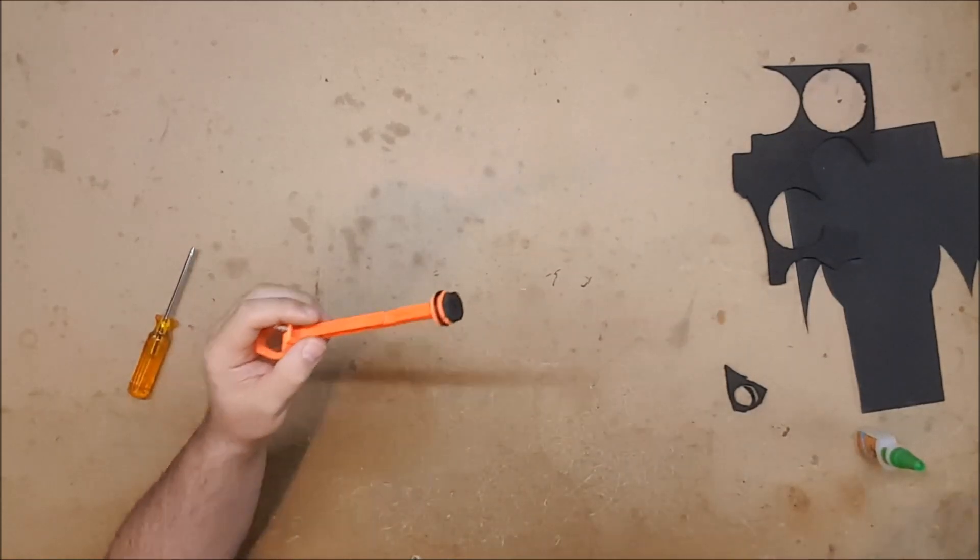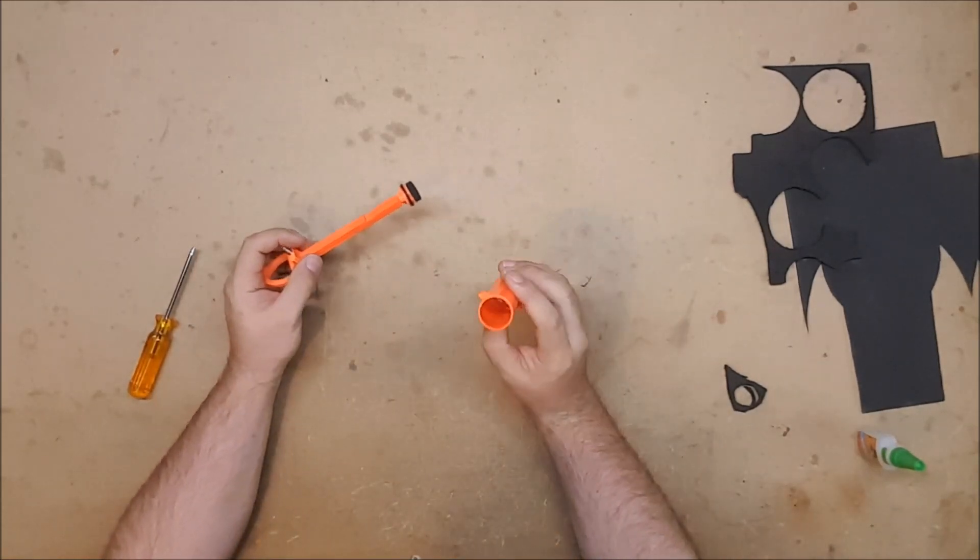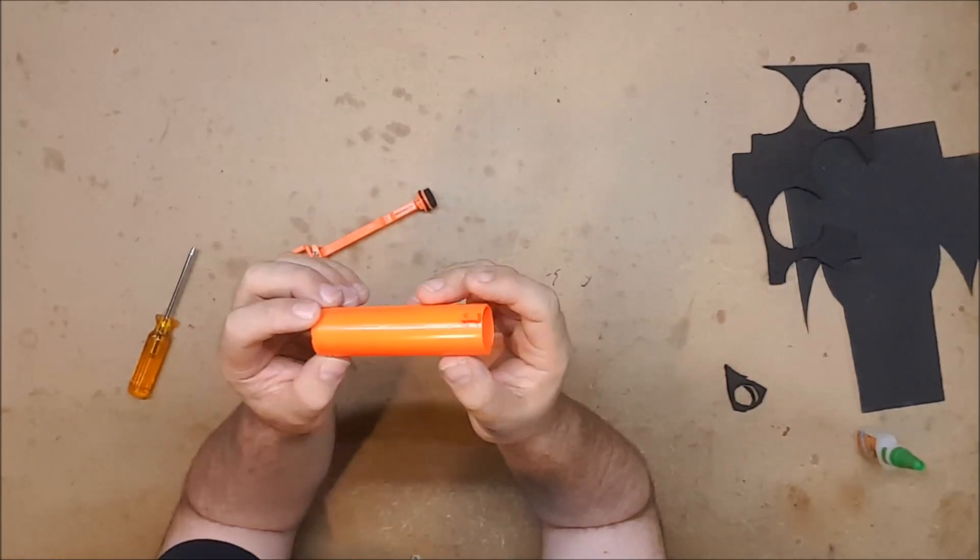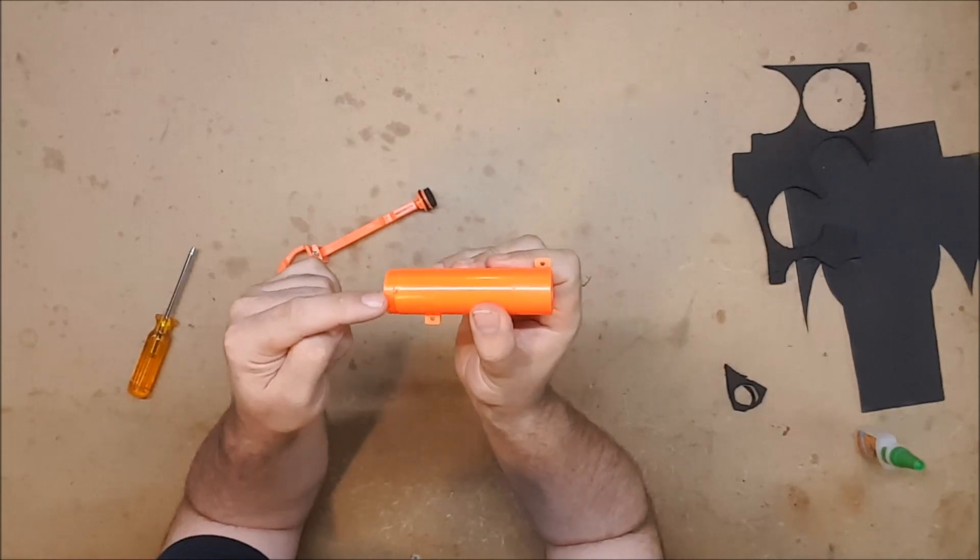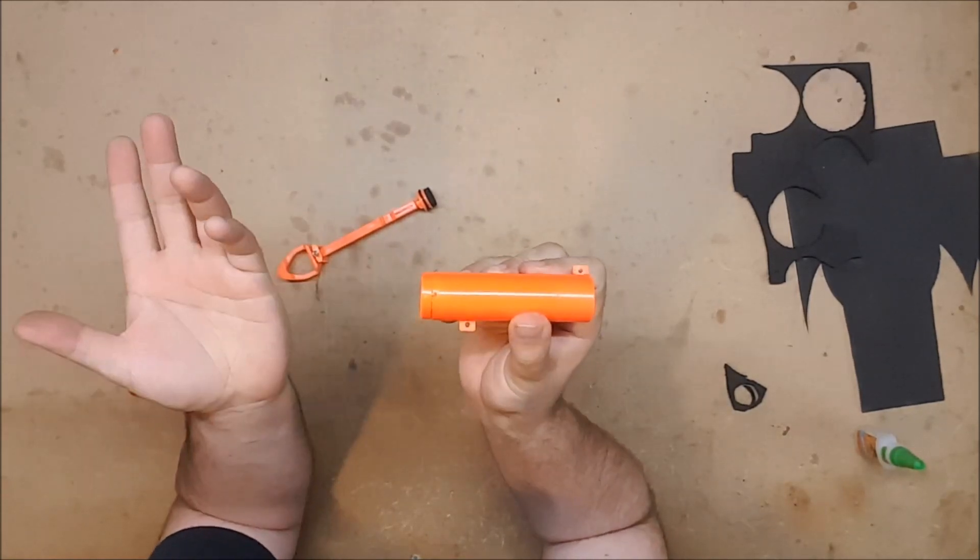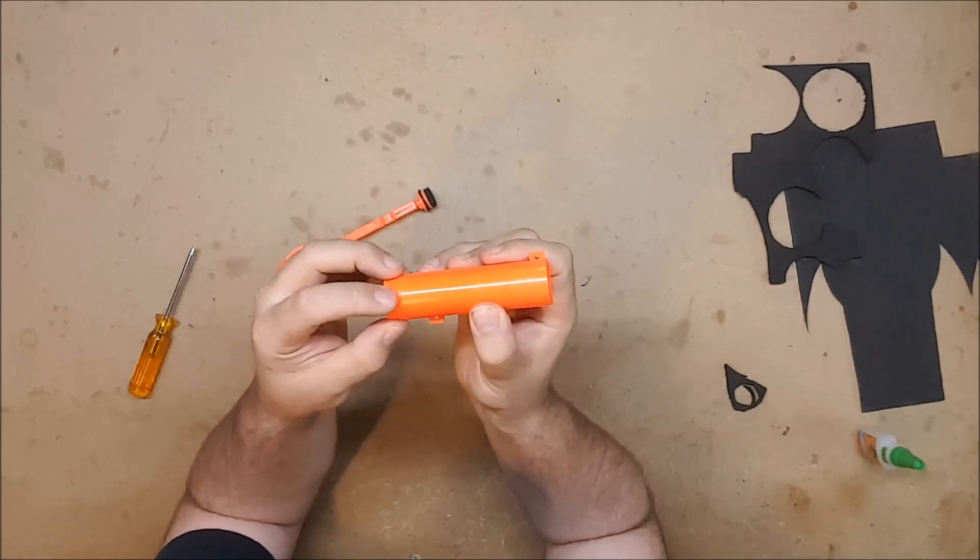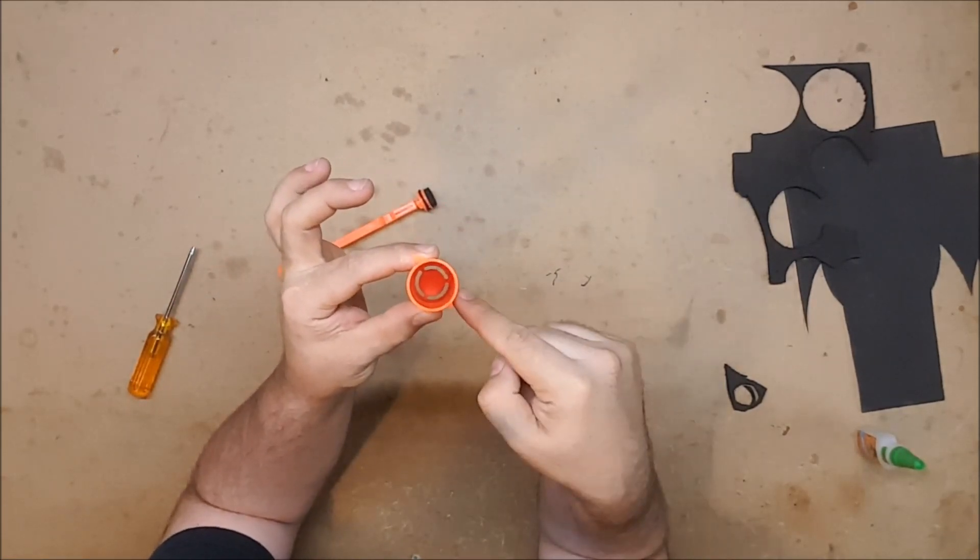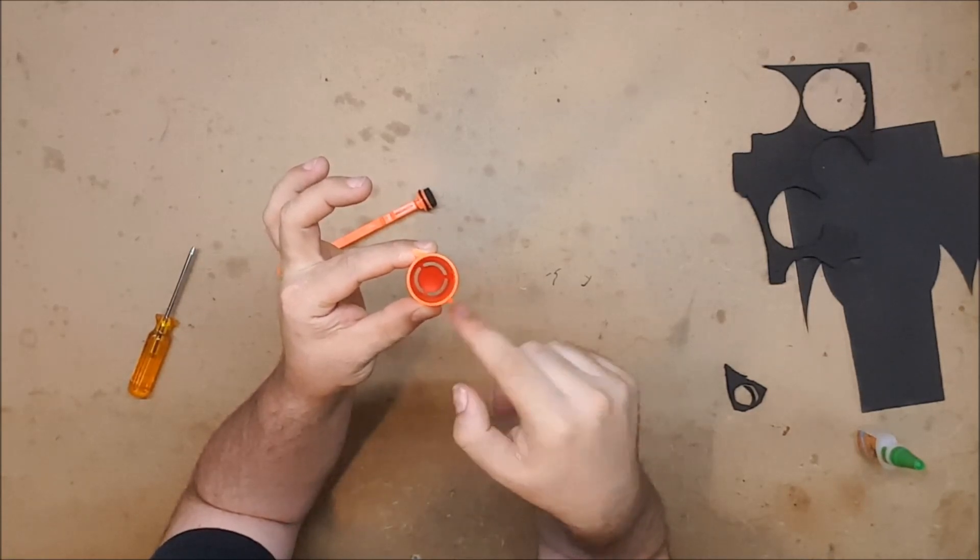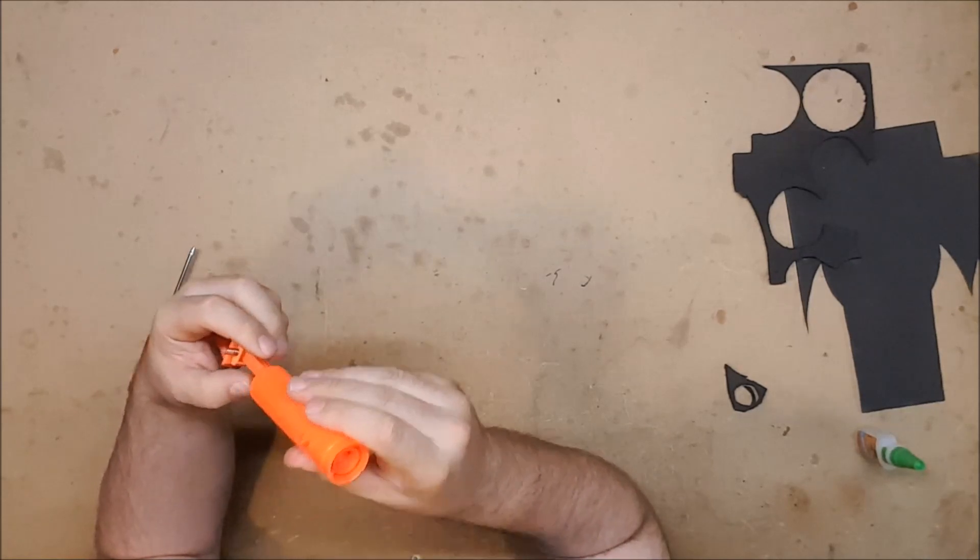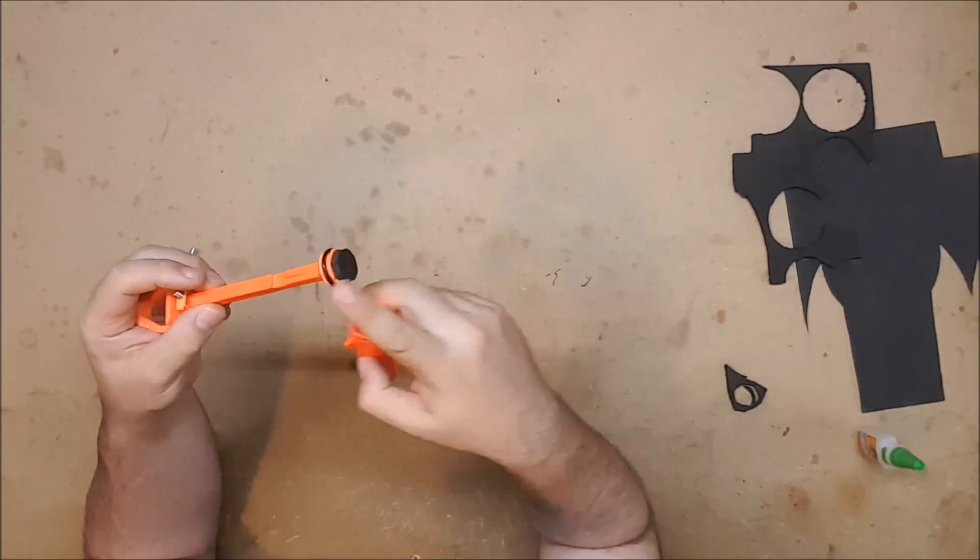The other option is on some blasters you can actually take the plunger tube assembly apart. This one, this top cap is solvent welded on, but it's not on all blasters. If you can get that section off, then you'd be able to glue directly to that center area which is where the plunger actually hits, and you could pad that instead, or as well. You could do thin foam on both if you felt like it.